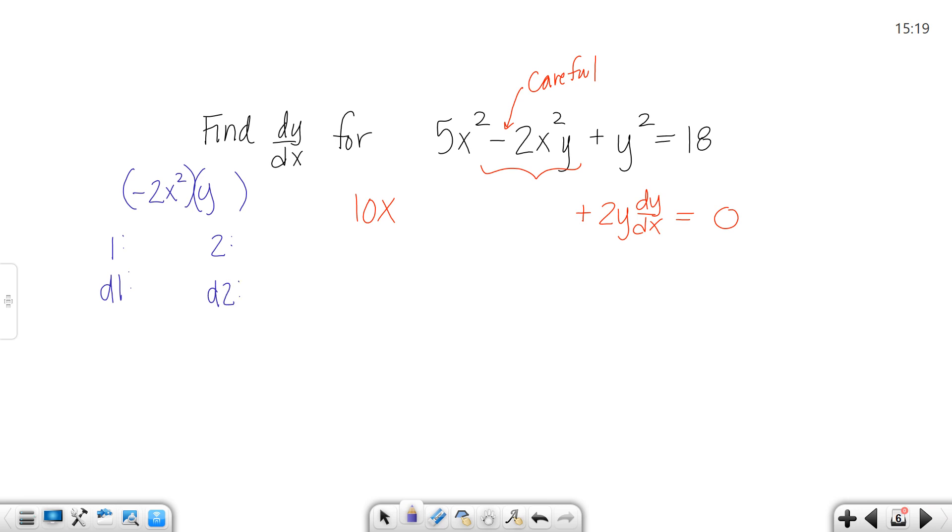Now there are other ways to do it. Be super careful. As soon as I put that negative with this 2, whatever I get in blue is going to go directly in. Then I've handled the negative by going ahead and dealing with it inside the derivative. So my first function is actually a negative 2x squared and my second function is y. So d1 would be negative 4x and d2 would be 1 dy/dx.